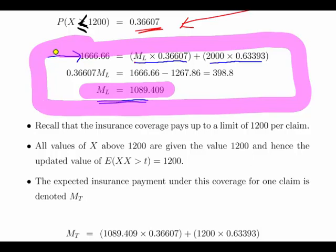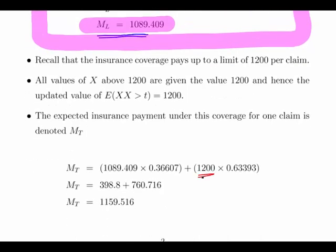Now I'm going to introduce this cap. Where it was 2000 beforehand, now they're all going to get 1200 no matter what. So the expected value of that is 1200 and it's still 63.393% of them.